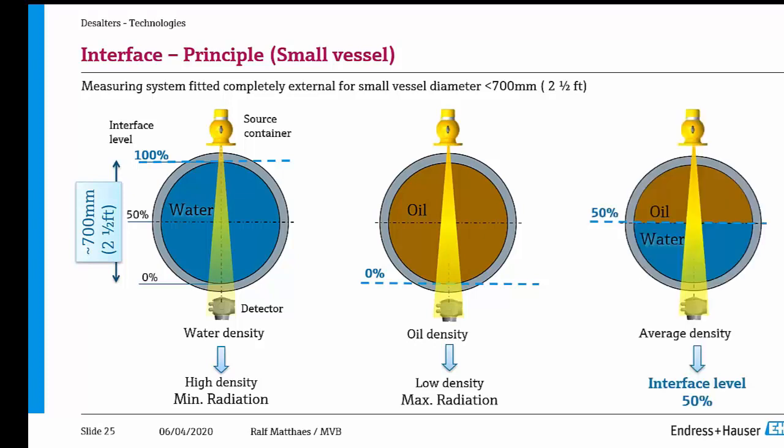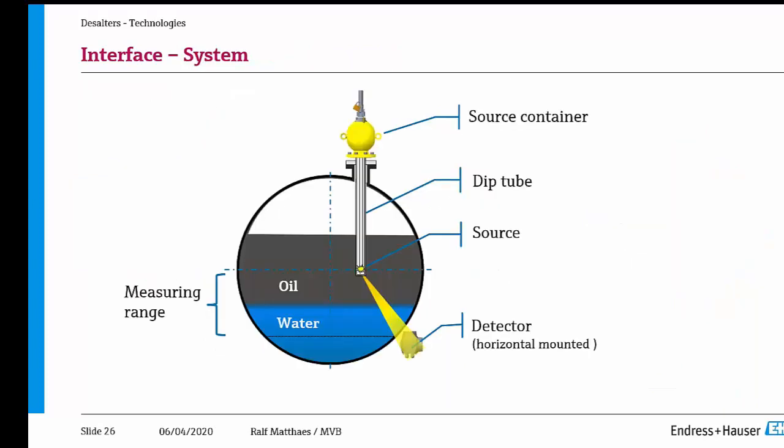In practice, separators have diameters of 3 to 5 meters. The source is inserted into a dip tube — a closed tube — so the source is not in contact with the medium. The source is lowered by a cable into the dip tube to its defined position. The detector is positioned outside, and we have approximately 700 mm distance between source and detector to cover the measuring range.